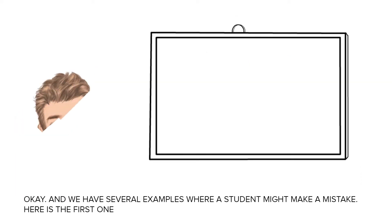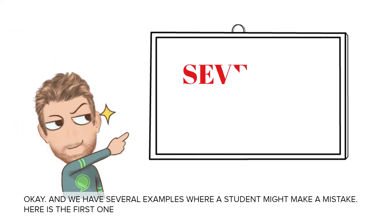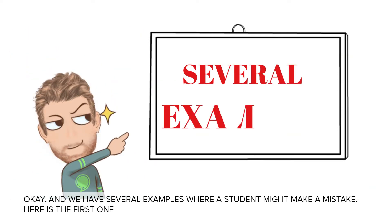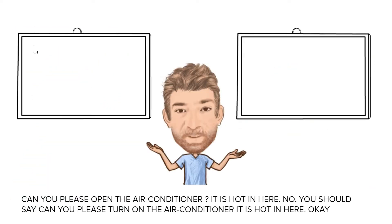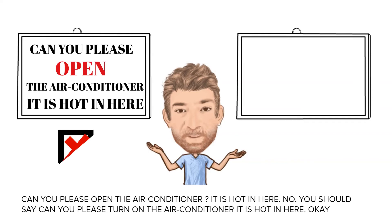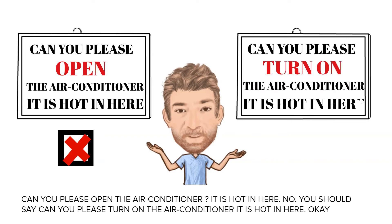We have several examples where a student might make a mistake. Here's the first one. Incorrect: 'Can you please open the air conditioner? It is hot in here.' You should say: 'Can you please turn on the air conditioner? It is hot in here.'